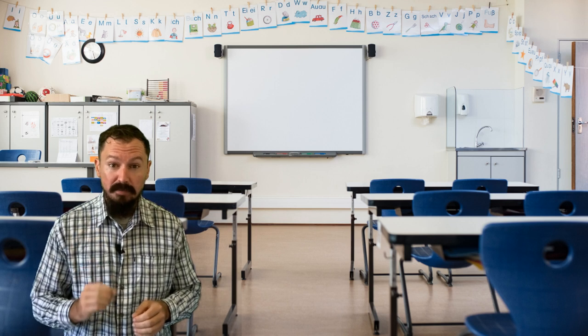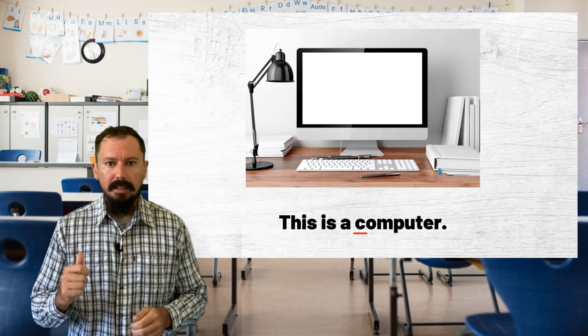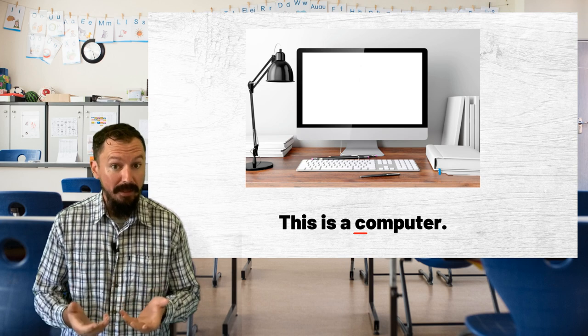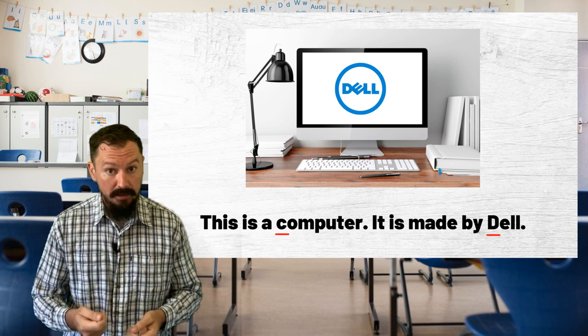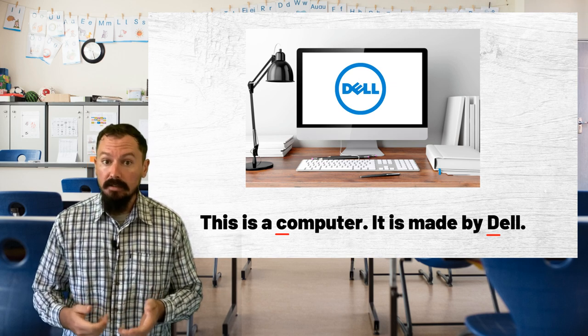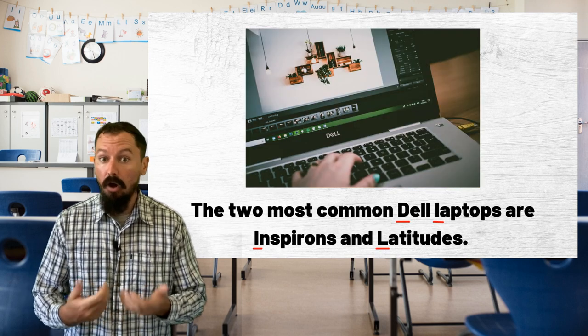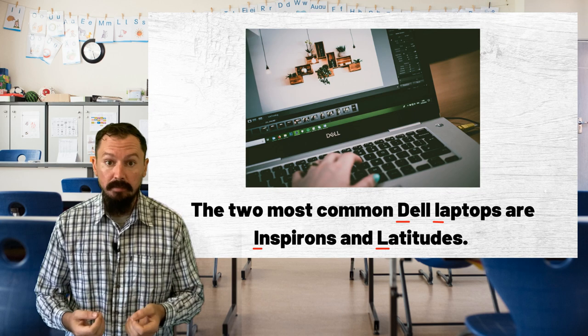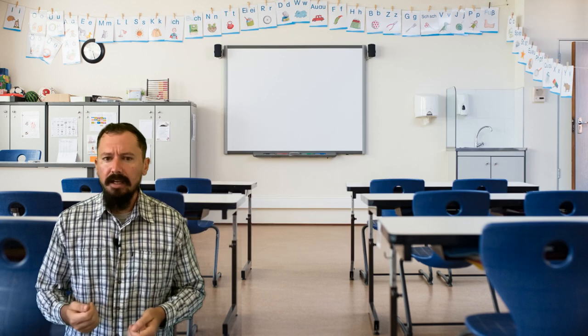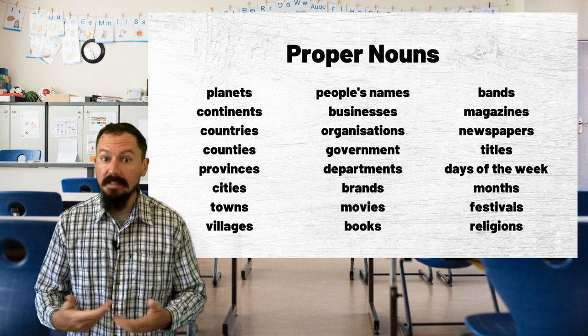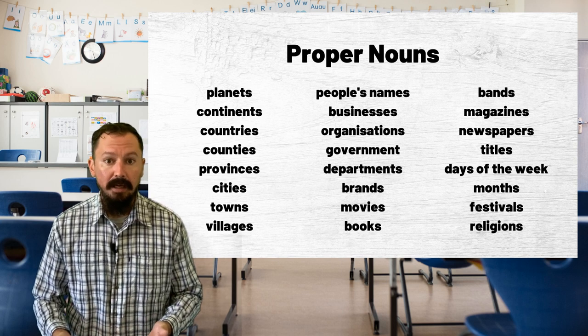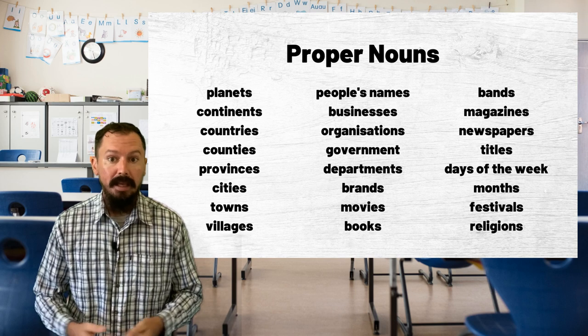Proper nouns, however, are words that refer to something more specific and unmistakable. While a computer is just a thing, the company that made it would have an official name and this would be capitalized. Likewise, companies may have different types of computers with official names — these would all need to be capitalized. Most things that have an official name are capitalized in English. All countries, counties, continents, provinces, cities, and towns should be capitalized. Even the whole planet, Earth, should be capitalized, and we capitalize the other planets in the solar system too.